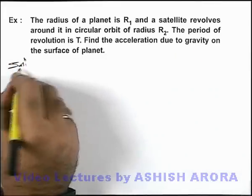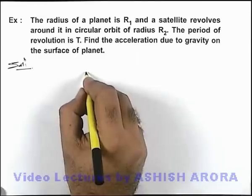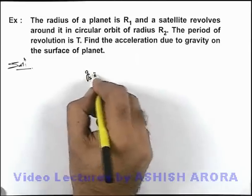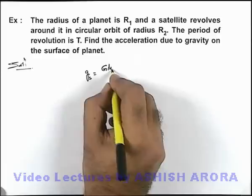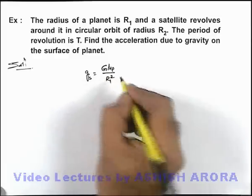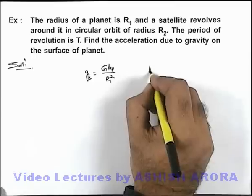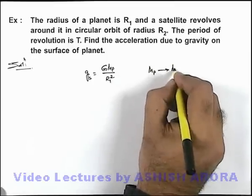Now in this situation, as we know that acceleration due to gravity on the surface of planet is given by GM_p divided by R₁ squared, where M_p is the mass of planet.